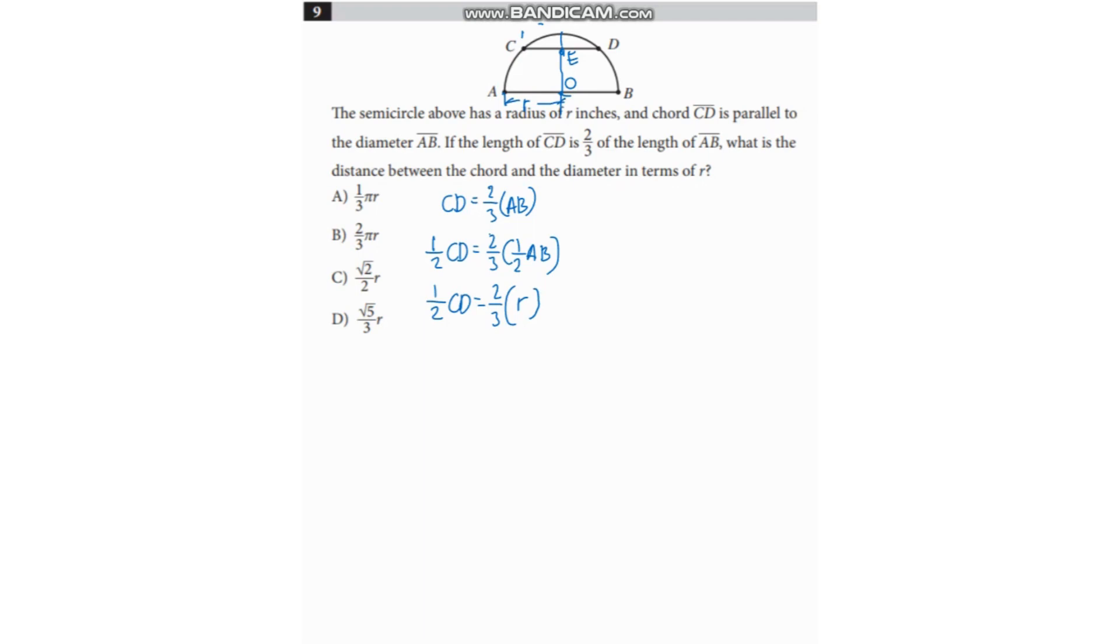Half of CD is two-thirds of R. This means that CD and half of that is equal to two-thirds of R.